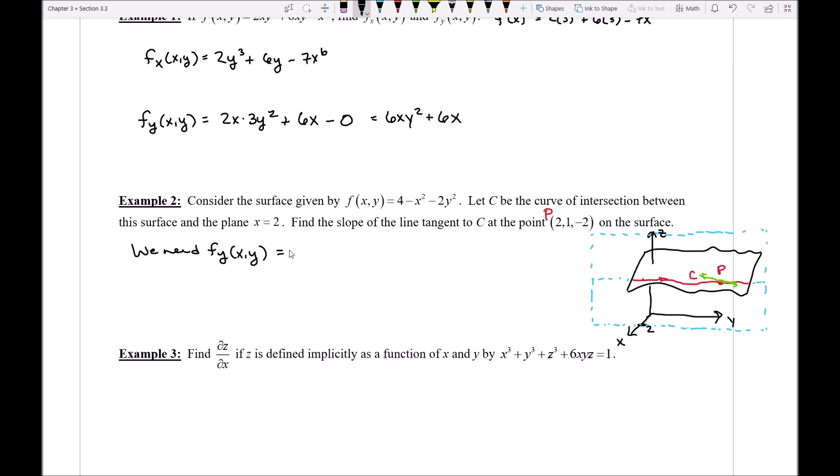So I can go ahead and actually do this here really quickly. Notice if I wanted this partial derivative I'm gonna take the derivative treating x like it's a number. So here I would get 0 for the derivative of the 4, 0 for the x squared because I'm treating x like it's a number, and then finally minus 4y. Got to bring the power down. So this would represent the partial derivative with respect to y, that is, it would represent the slope of every tangent line along that entire curve.